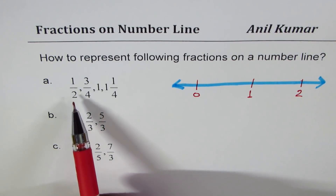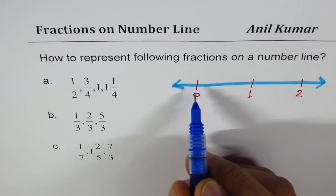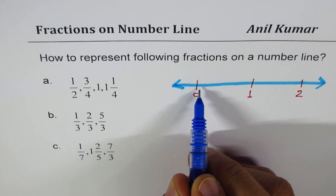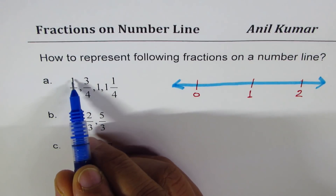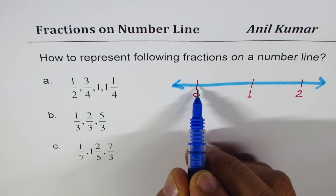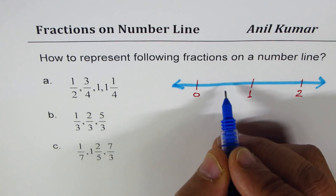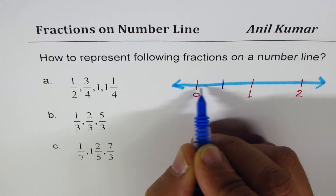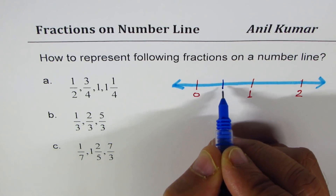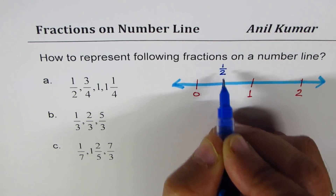Now when we say half, let's mark half on our number line. Half really means it equally divides the segment between 0 and 1. Half means 1 out of 2, so I have to divide this line segment from 0 to 1 into 2 equal parts. If both sides are the same distance, then that number will be half. That is how you represent half.